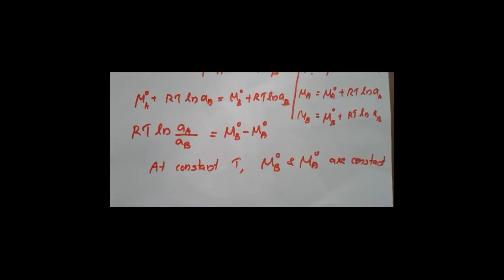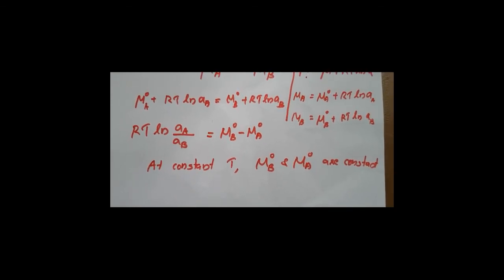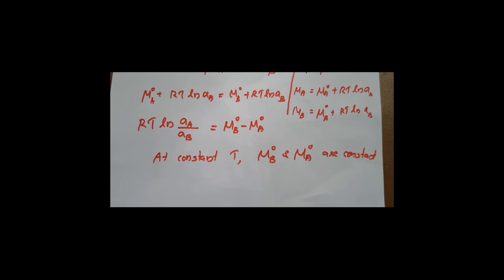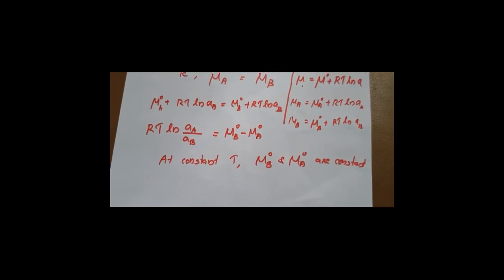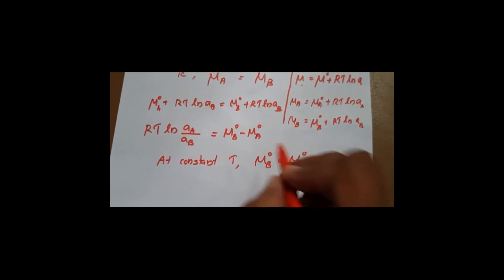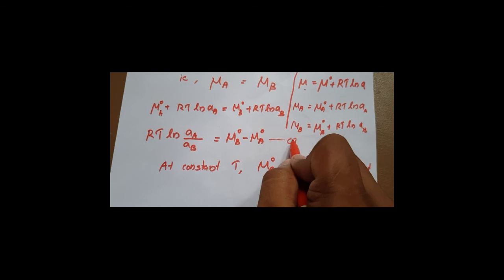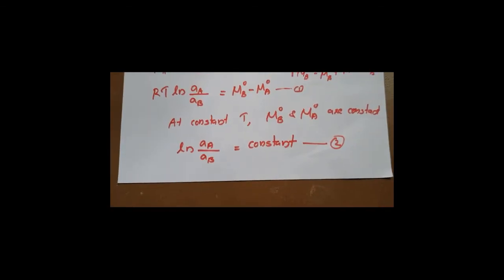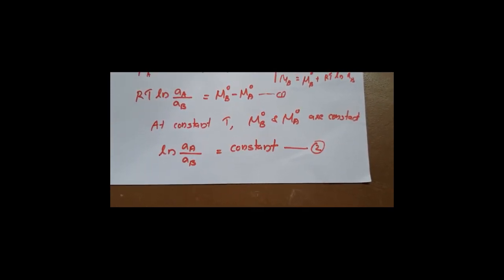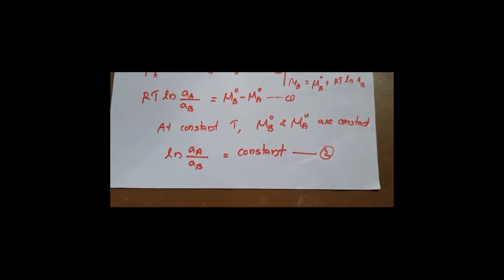At constant temperature, μA₀ and μB₀ are constant. R is the universal gas constant and is also constant. Temperature must be constant — that is one of the conditions for Nernst distribution. Since R, T, μA₀, and μB₀ are all constants, equation 1 becomes ln(AA / AB) is equal to a constant — that is equation number 2.